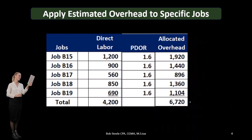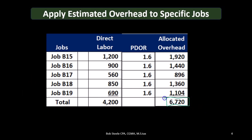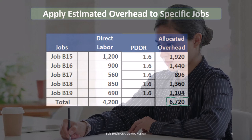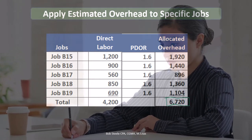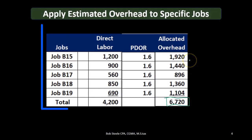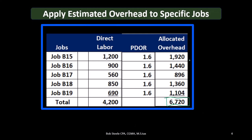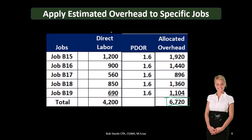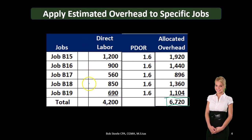The total of 6,720 is all we need to make the journal entry, because we're moving this amount from the overhead account to the work in process account. But we need this worksheet to tell us how much of that overhead should be applied to each specific job. Remember, every time we transfer something to work in process, it needs to be supported by the individual jobs. Also remember that although we're using direct labor, the overhead has nothing to do with direct labor — it's just using direct labor as a means to measure how big one job is relative to another.